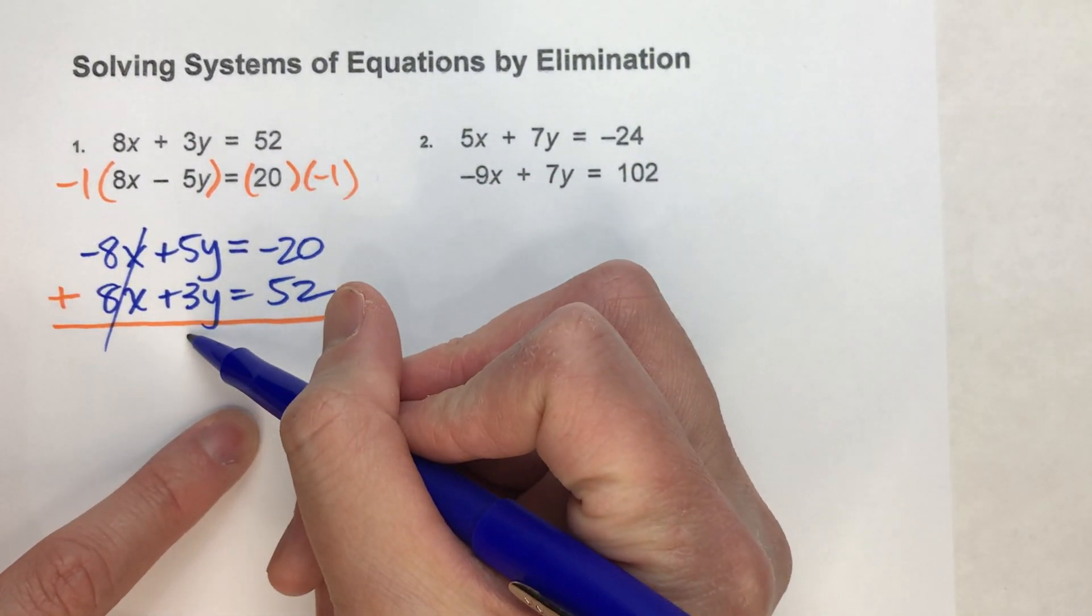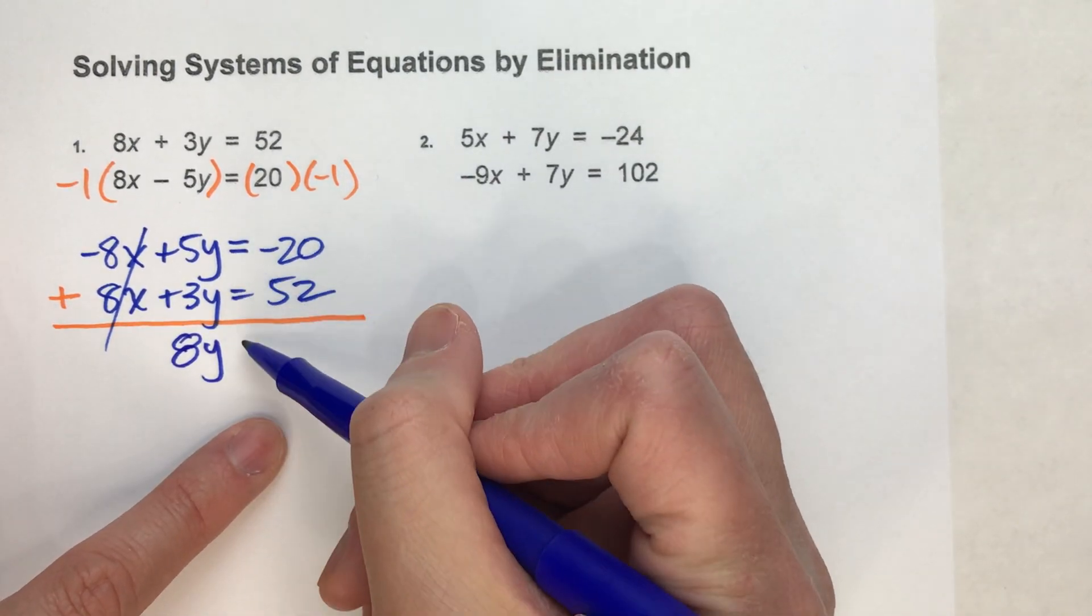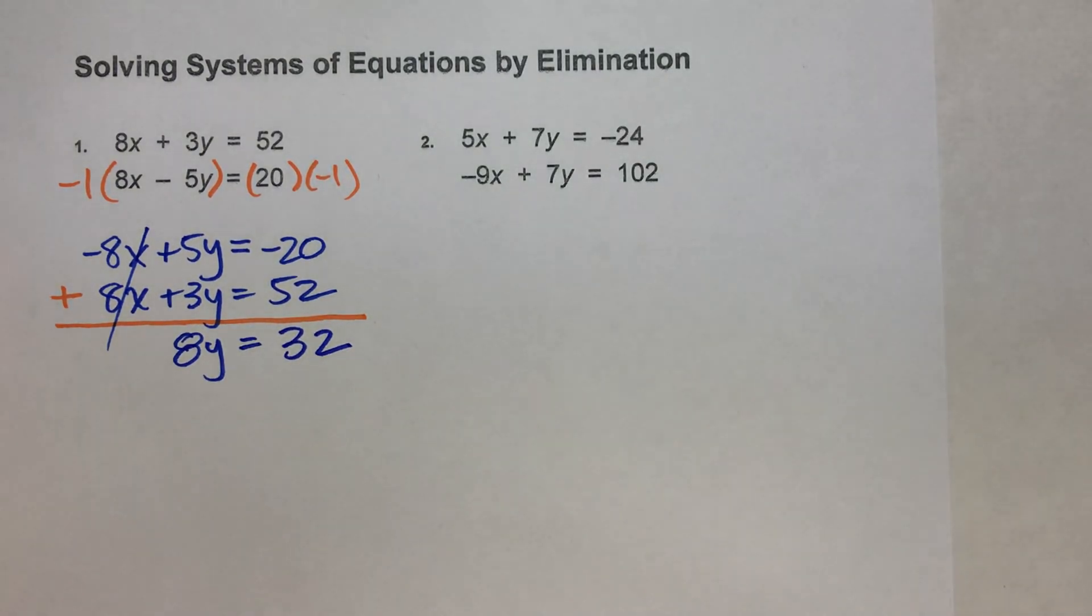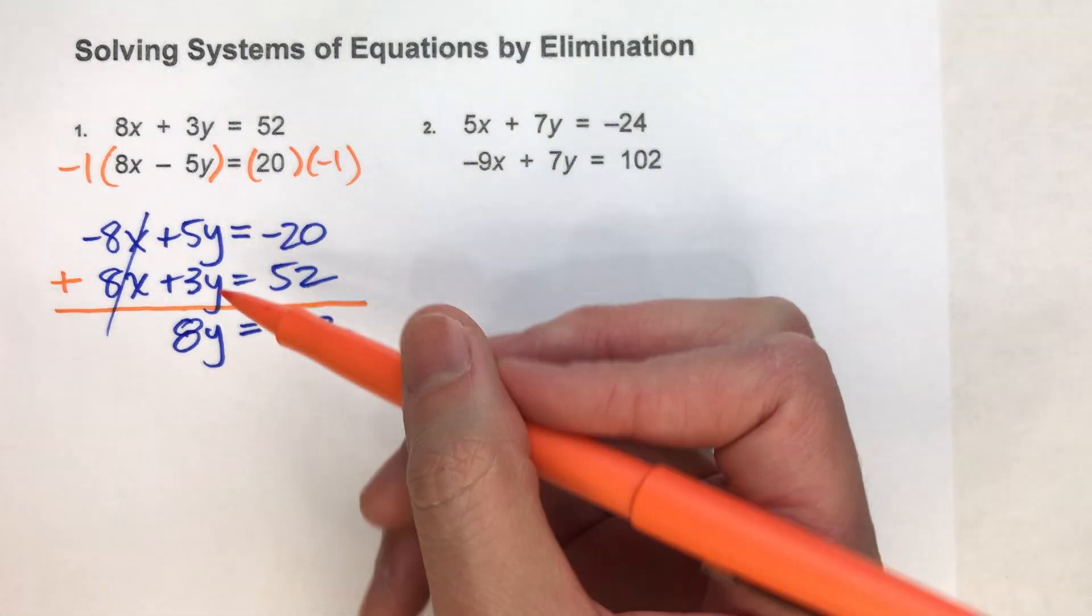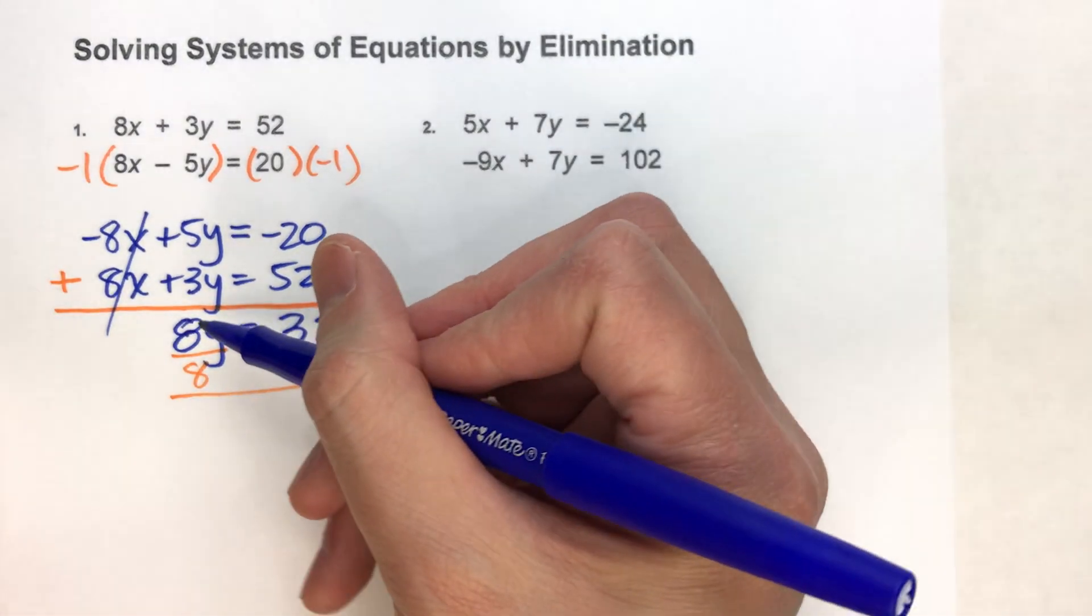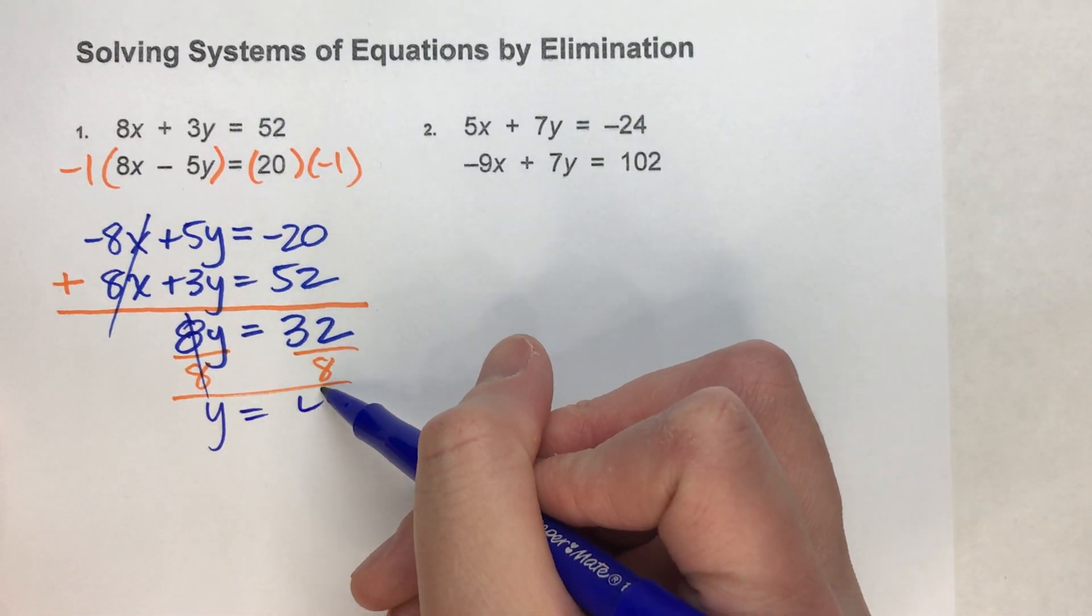5y plus 3y equals 8y. Drop down my equals sign. Negative 20 plus 52 equals positive 32. And look, now I can easily solve for y. All I have to do is divide both sides by 8. I end up getting y = 4.